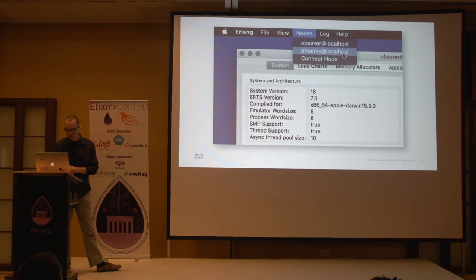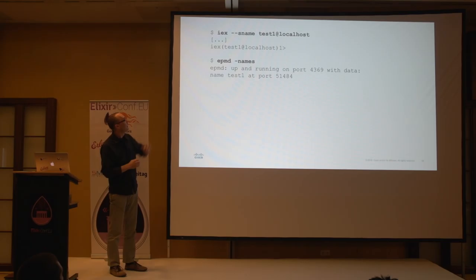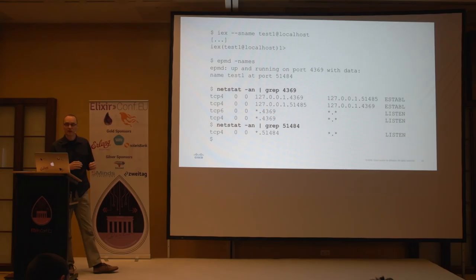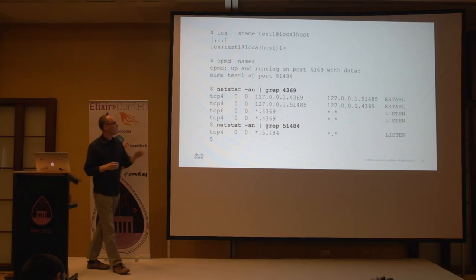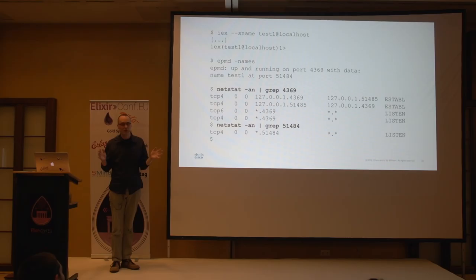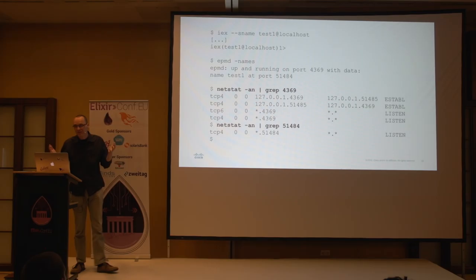Forget the Phoenix server for now — here I'm just starting an IEX session with a short name, and EPMD CLI shows me the node is registered. Looking at what netstat tells me about ports: the first couple of lines show EPMD and its listening port 4369, bound to the wildcard interface — not bound to any particular IP address. So even though I specified localhost as the hostname, EPMD is actually reachable from any network interface. Same thing with the virtual machine.